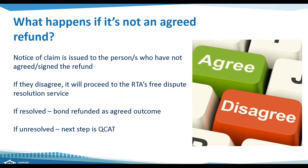If it's not an agreed refund, and parties do not agree, it becomes a notice of claim process. People who have not agreed are given 14 days to respond to the claim. If they disagree, it proceeds to the RTA's free dispute resolution for conciliation. If a resolution is reached, the bond is refunded as agreed during the process. If it's not resolved, the matter proceeds to the Queensland Civil and Administrative Tribunal (QCAT). The conciliator will step you through both of those processes.